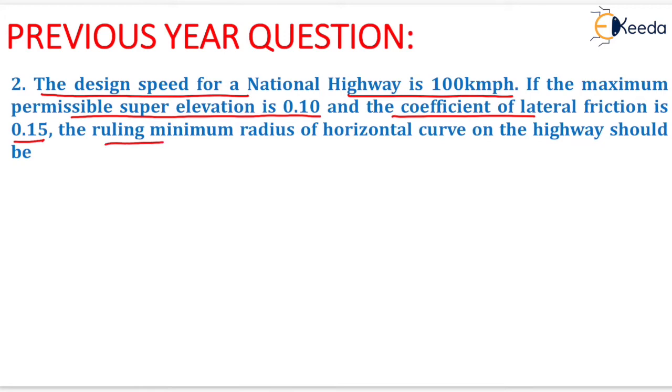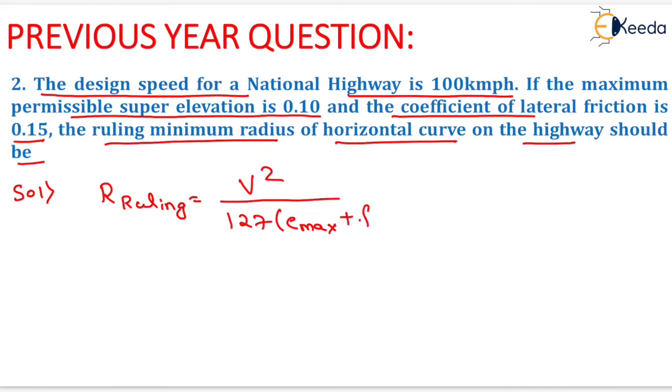The ruling minimum radius of horizontal curve on the highway should be what? We need to find the ruling radius of the horizontal curve. We know the formula: R ruling equals V squared upon 127 times Emax plus F.